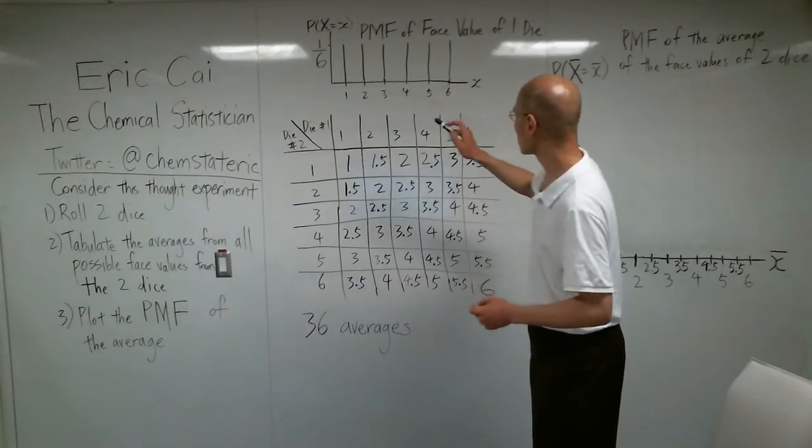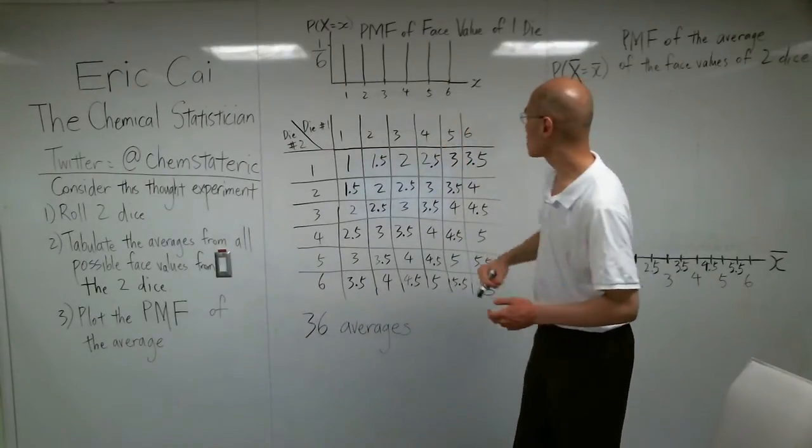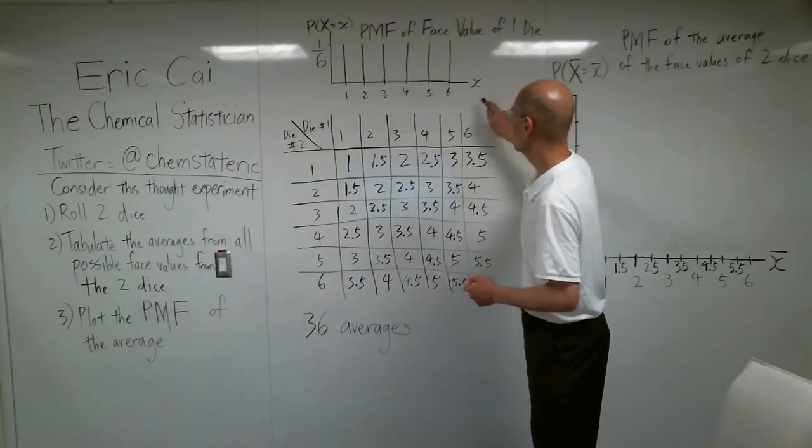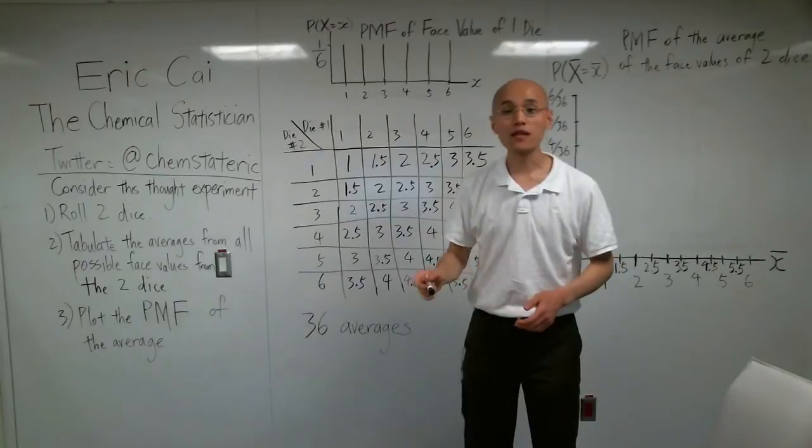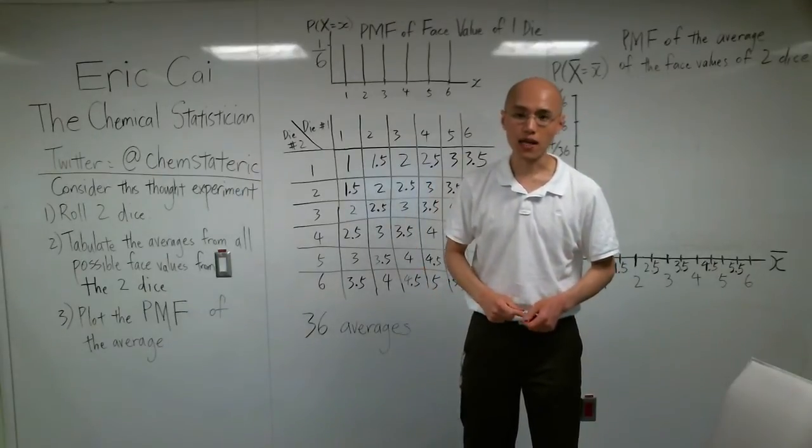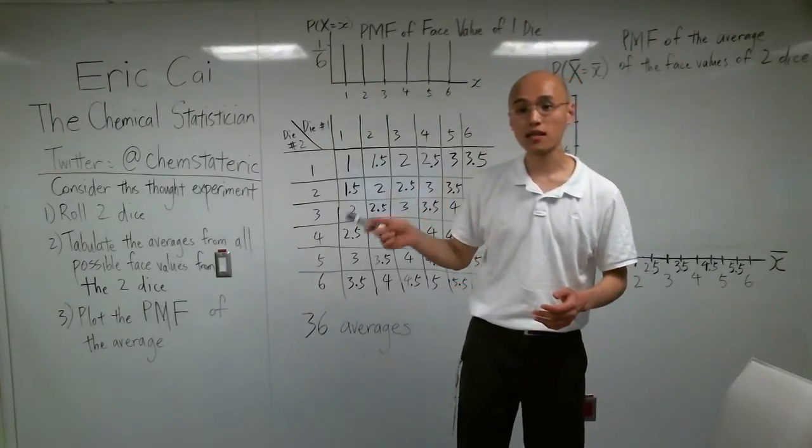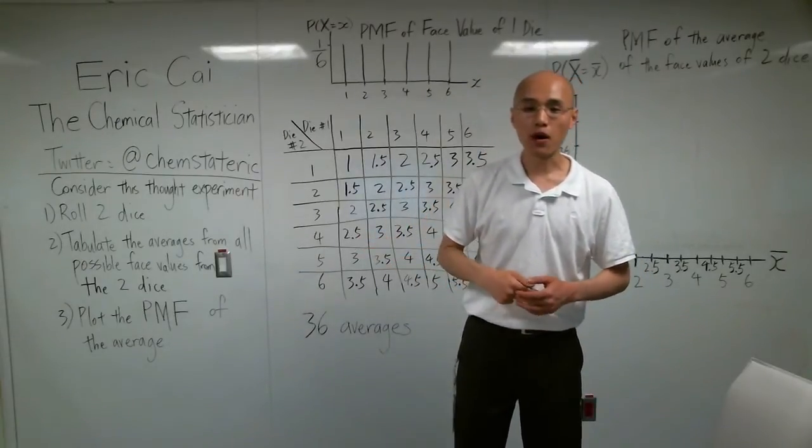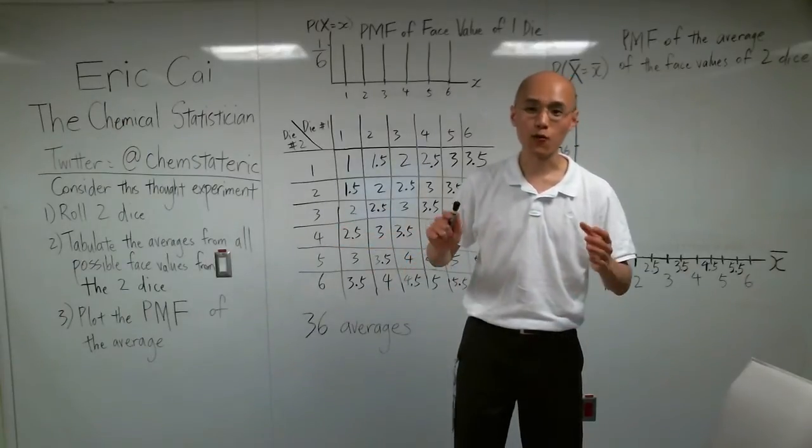So, the support set has six values: one, two, three, four, five, six, and the probability of the face value being any one of these values is one over six. Notice that this is a uniform multinomial distribution. This multinomial distribution has six categories, and the probability across all six categories is uniformly one over six.